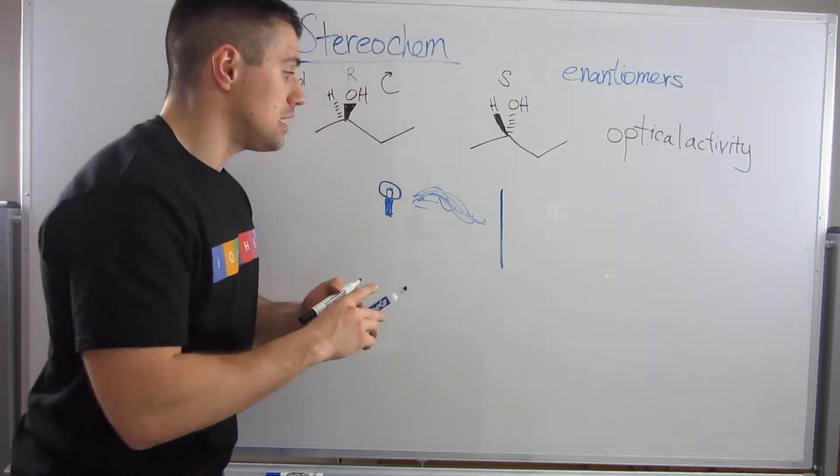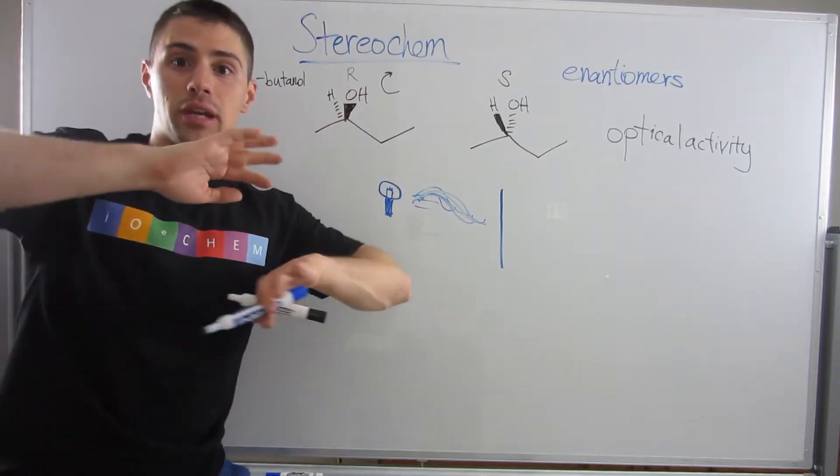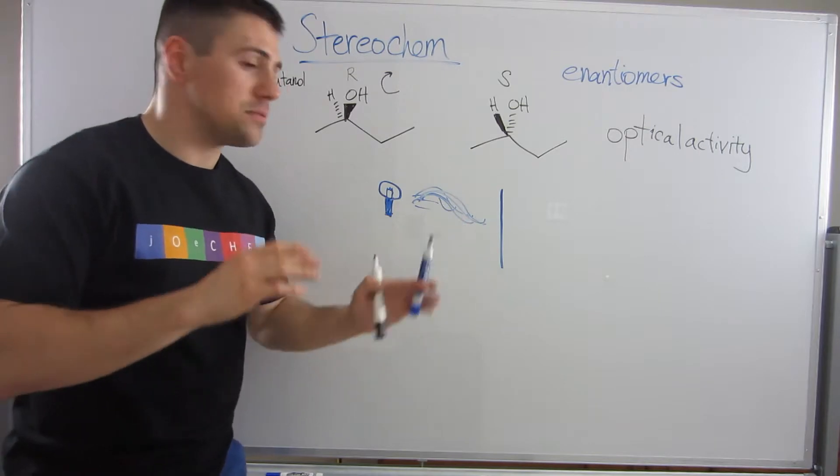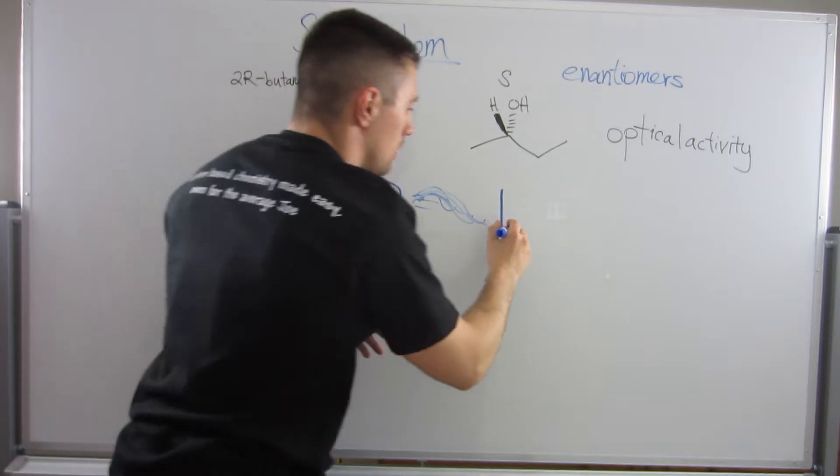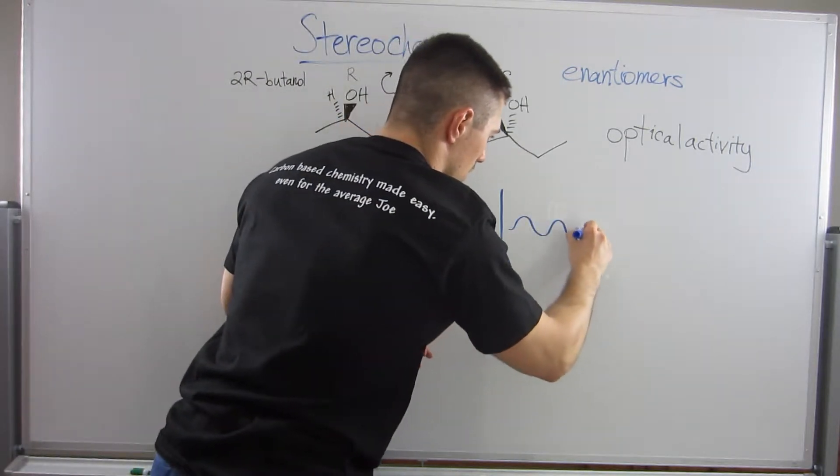So what people do to measure a chemical's optical activity is they'll shine light through a filter. And this filter only, because light has waves just going in every which way, the filter is meant to just get all the light going in one unified direction. Okay?